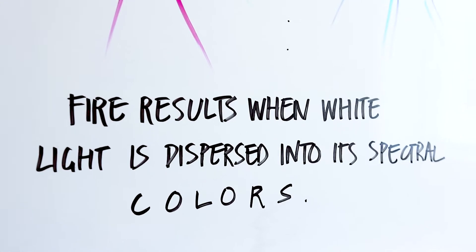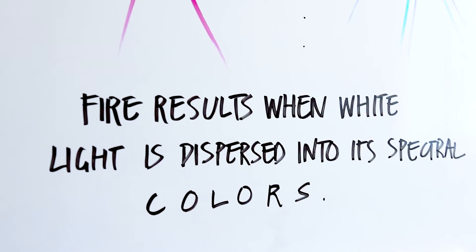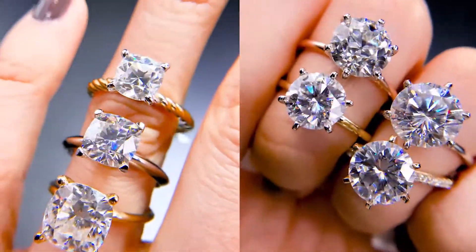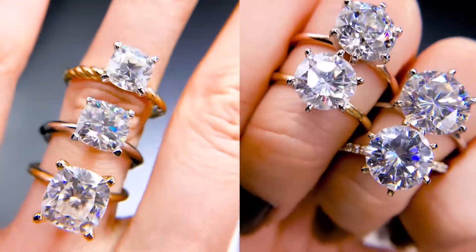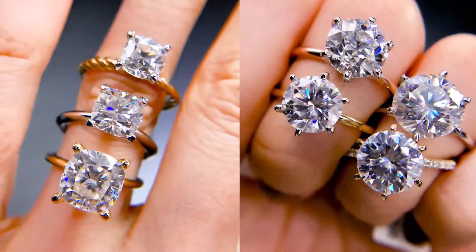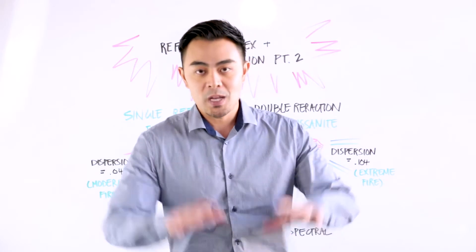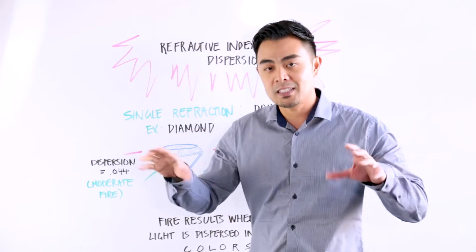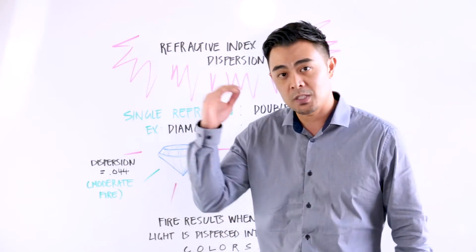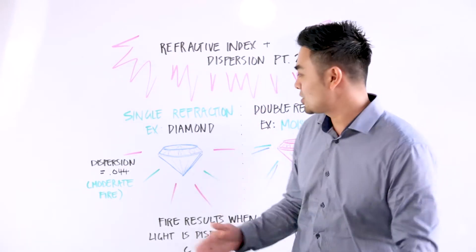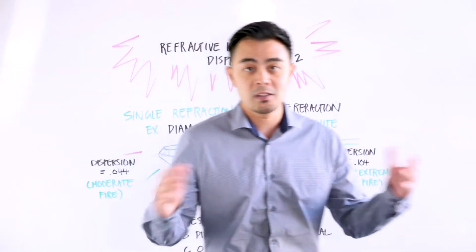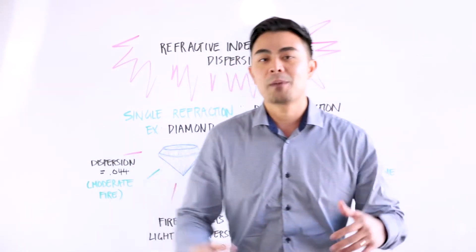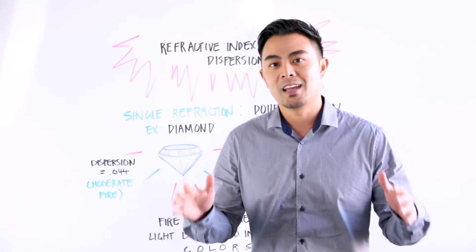So when white light enters moissanite, you will naturally see more reds, more blues, more greens — the full works of the rainbow. According to the GIA pamphlet, it is graded as extreme fire. To wrap up: dispersion is the breakout of white light into different wavelengths, each wavelength carrying a specific color. The colors that enter a gemstone — whether diamond, moissanite, or another — and return to your eyes is called fire. That's the breakdown of the meaning between fire and brilliance.